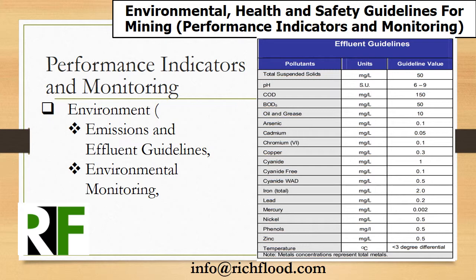Deviation from these levels in consideration of specific local project conditions should be justified in the environmental assessment. Combustion source emissions guidelines associated with steam and power generation from sources with capacity equal to or lower than 50 megawatts are addressed in the general EHS guideline, with larger power source emissions addressed in the EHS guideline for thermal power.